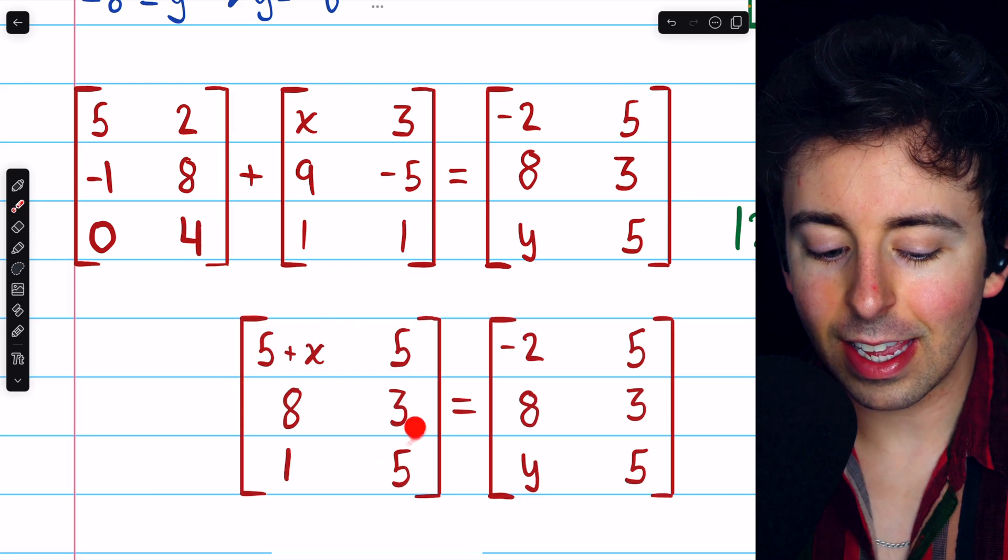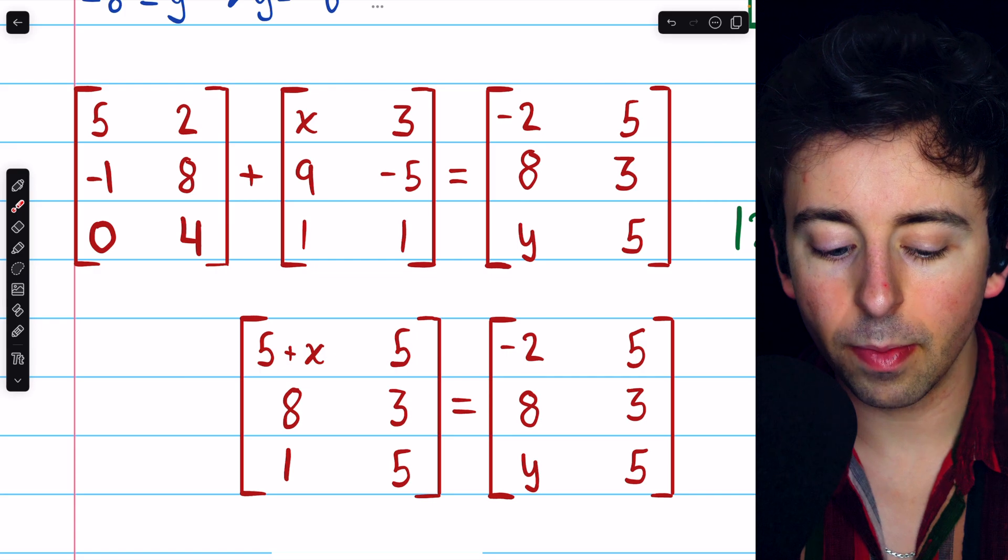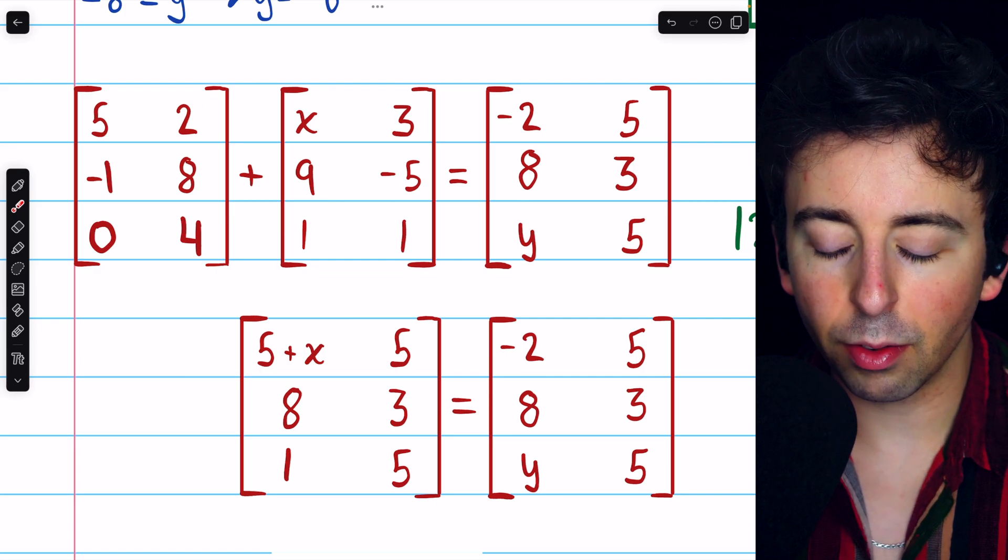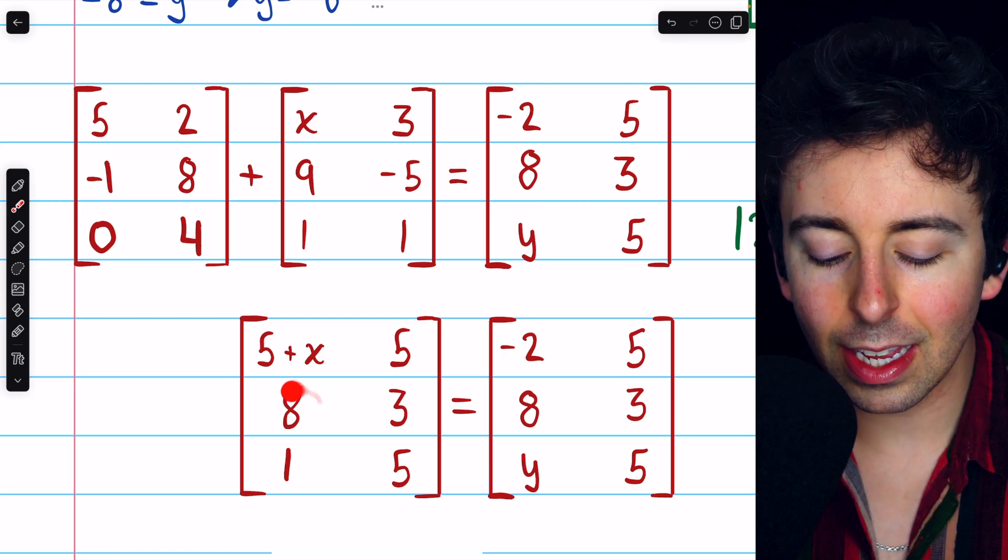And that gets us here. 5 plus x gives us 5 plus x in row 1, column 1. 2 plus 3 gives us 5 in row 1, column 2. Negative 1 plus 9 gives us 8 in row 2, column 1.